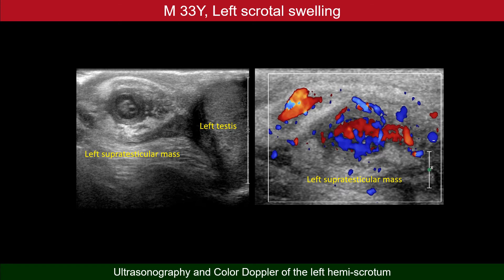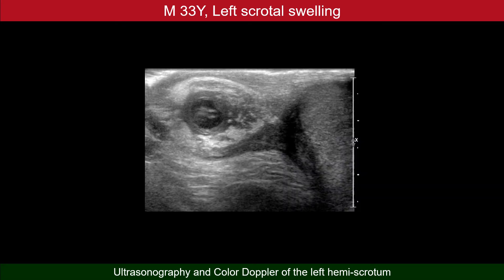Color on color Doppler sonography does not necessarily mean flow of blood. It is the Doppler shift caused by a moving structure — any moving structure. On this real-time grayscale ultrasonography, we'll see that the moving structures are in fact in the center of the lesion.